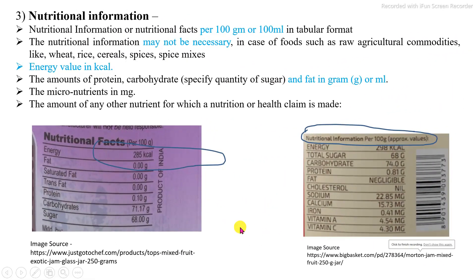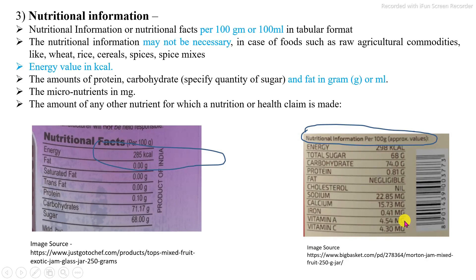The third requirement is nutritional information. Nutritional information or nutritional facts are displayed in tabular form, per 100 grams or 100 ml of that product. The specific format lists first energy, then major constituents, then minor constituents. Energy is in kilocalories, major nutritional values are in grams, and minor nutritional values are in milligrams. As per the specific nutritional content of that food, this table is arranged and declared on packed food.